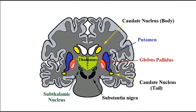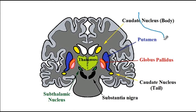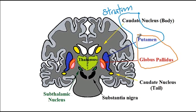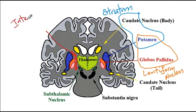To review the anatomy: the caudate nucleus is divided into body on top and tail at the bottom; we have the putamen; globus pallidus divided into GPE and GPI; the subthalamic nucleus located right under the thalamus; and the substantia nigra. Additional terminology: the caudate and putamen together are referred to as the striatum, and the putamen and globus pallidus together are referred to as the lentiform nucleus. The internal capsule is the brain structure between the caudate, putamen, and thalamus.